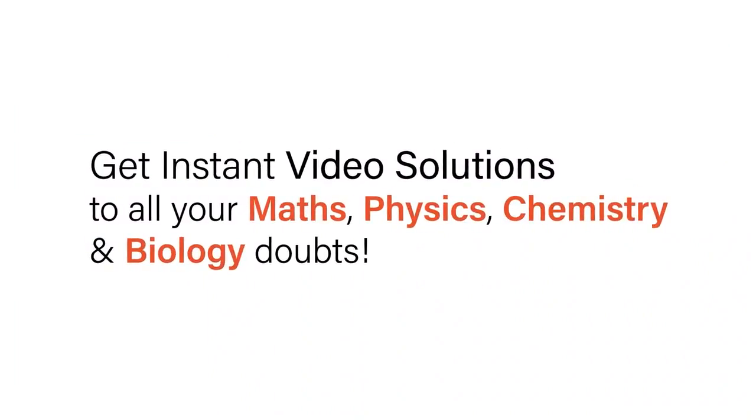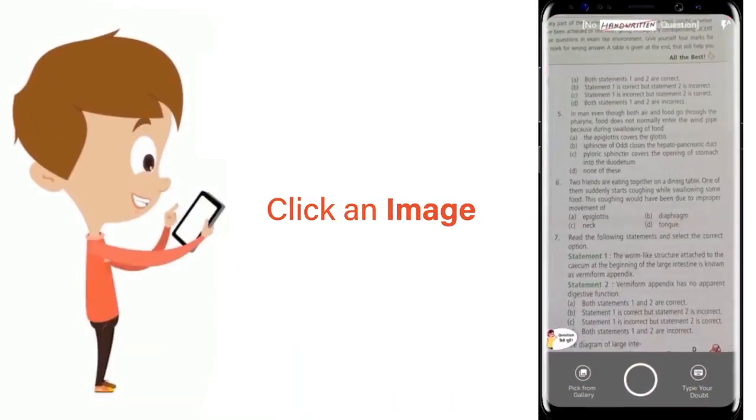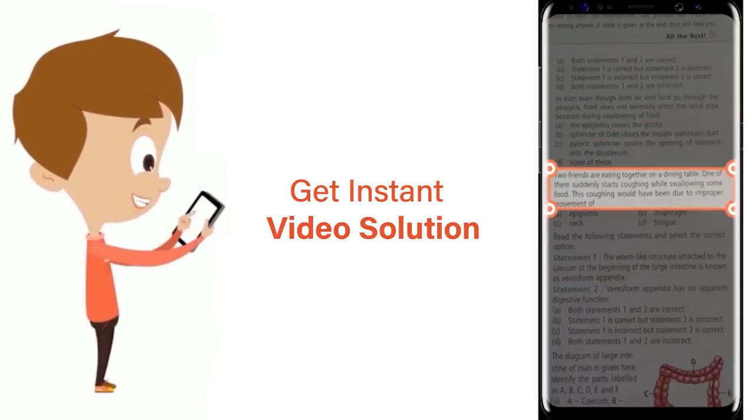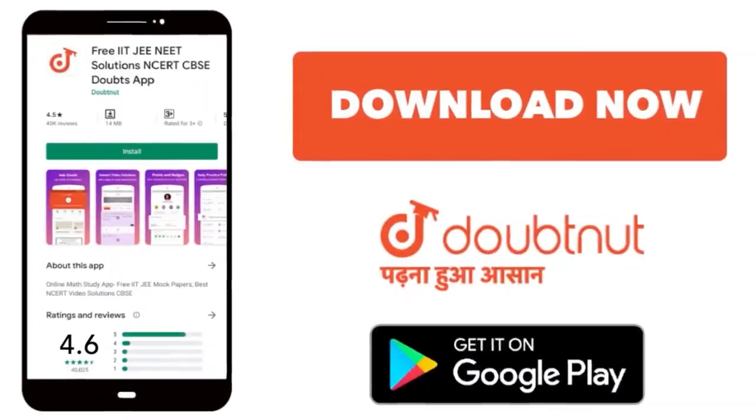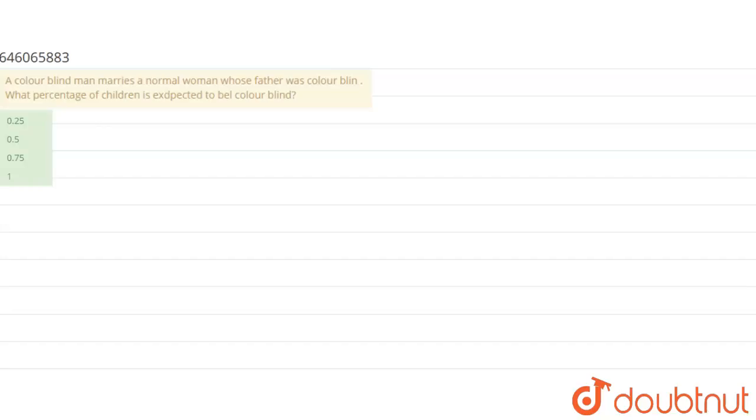With Doubtnet, get instant video solutions to all your maths, physics, chemistry, and biology doubts. Just click the image of the question, crop the question, and get instant video solution. Download Doubtnet app today. The question here is a colorblind man marries a normal woman whose father was colorblind.